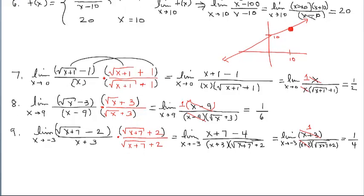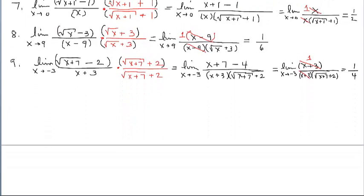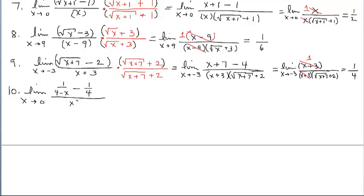I want to do one more example. It doesn't require the dividing out technique or the rationalizing technique, but it's a neat little problem. We're going to have a complex fraction — a fraction that has fractions inside of it. We have fractions in the numerator of a fraction and x in the denominator. Just plug in 0: wherever you see x, you get 1 fourth minus 1 fourth, which is 0 over 0. So our problem is this x. Since we get indeterminate, you automatically think factoring — but I don't see anything that's going to work. Think conjugates — but that's usually for square roots, so that doesn't really apply here.